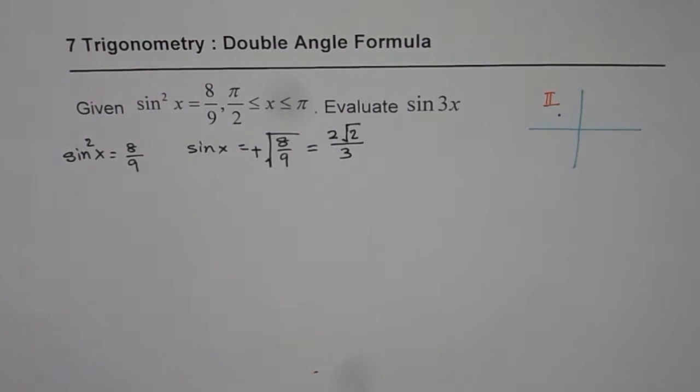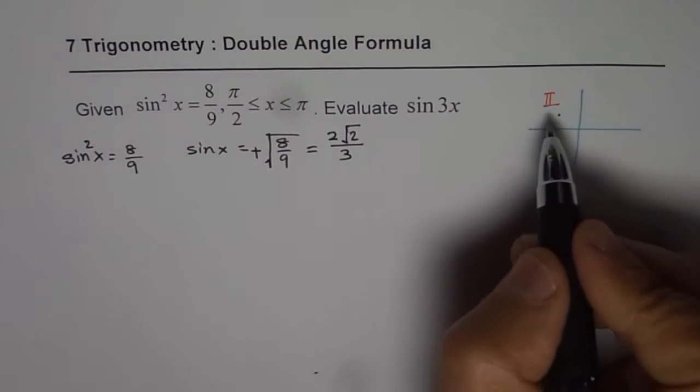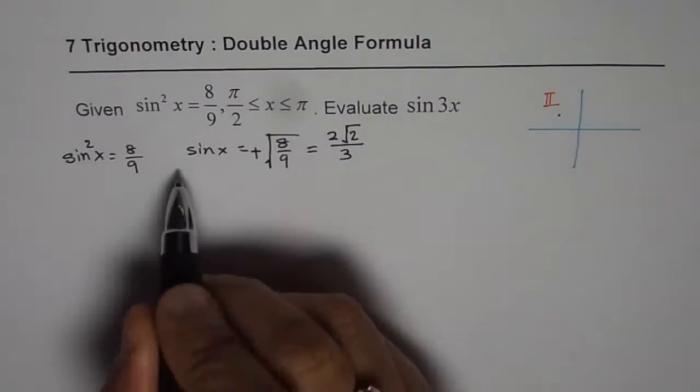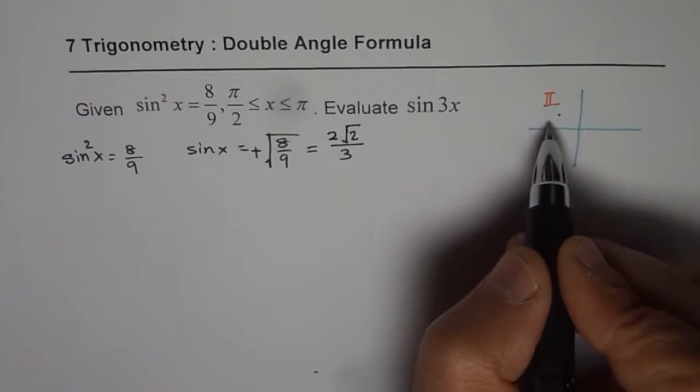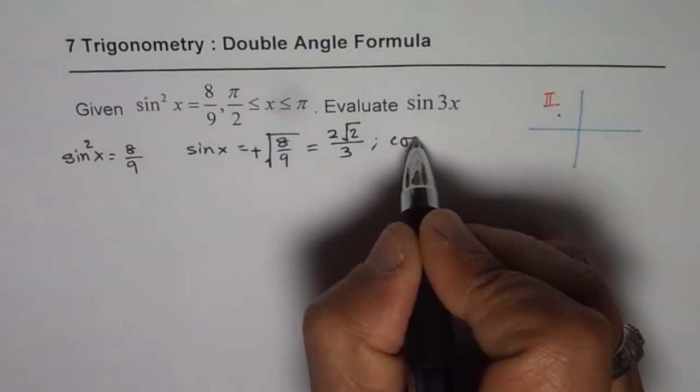So that is the value for sin x. Remember, in this quadrant, cos x will be negative. Cos x is going to be negative in this particular quadrant. So you can find cos x also.